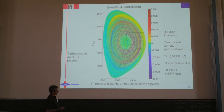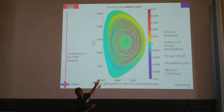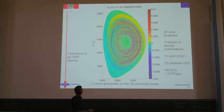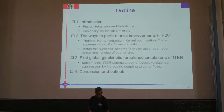For that particle simulation we have 2 billion particles. This is a picture of a density perturbation caused by the turbulence, in units of the sound speed — a Mach number of the perturbation. This scale is the gyration radius of the ions. The outline of my talk: I will give a short motivation of why we are doing these things — what is fusion, what is a tokamak, and why turbulence is important to study.